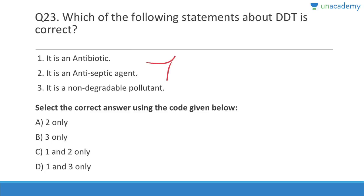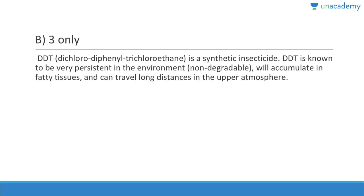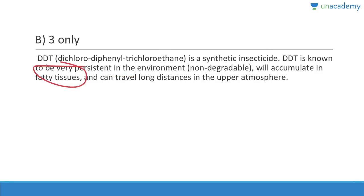Question 23: Which statement about DDT is correct? It is an antibiotic — wrong. It is an antiseptic — wrong. It is a non-degradable pollutant — correct. It is dichlorodiphenyltrichloroethane. Answer is B, option 3 only. It is a synthetic insecticide used to kill mosquitoes and is known to be very persistent in the environment. It accumulates in fatty tissue, can travel long distances in the upper atmosphere, and through biomagnification it can make bird eggshells brittle.